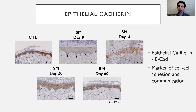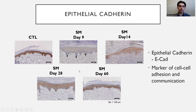The next protein we looked at was epithelial cadherin, also known as E-CAD, a marker of cell-to-cell adhesion and communication. In the control, you see constitutive expression along all layers of the epidermis. By day 9, there is an overall downregulation of E-CAD in all layers of the epidermis, especially along the basal layer, as indicated by the arrows. By day 14 and day 28, we see an overall upregulation compared to day 9, but still overall downregulated compared to control. And by day 60, we see it approaching control, but still slightly downregulated.